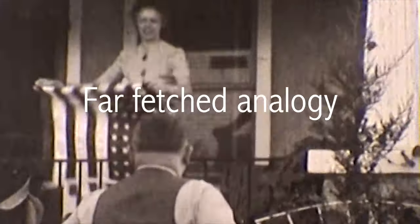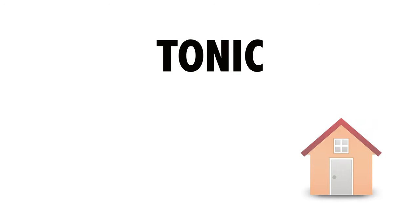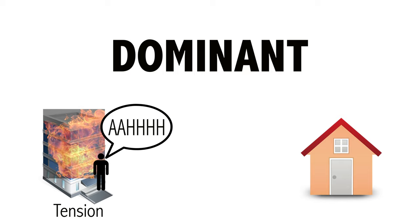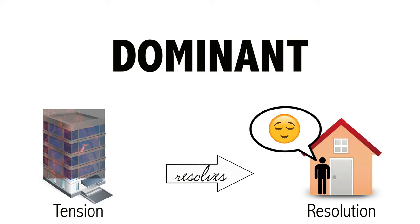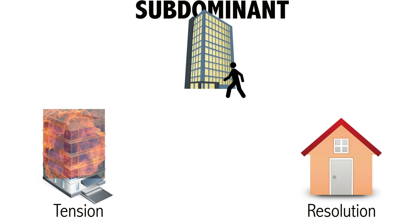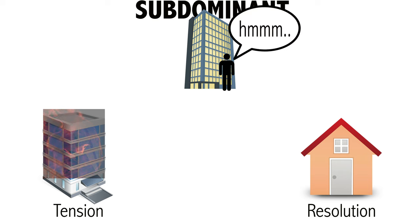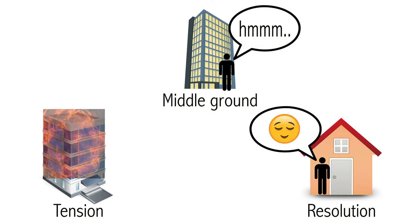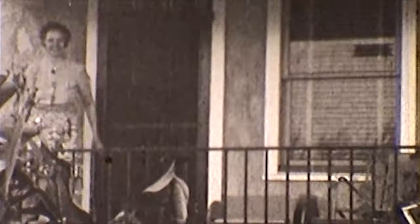Okay, far-fetched analogy time. Tonic is as if you were at home, everything is resolved and at rest. In dominant world, it's as if you were in a building that is on fire. The situation requires an urgent, urgent resolution. And subdominant is as if you were at, let's say, your office. It's fine, you can chill a bit, but you won't want to stay there forever. You'll want to go somewhere else eventually, either back home or towards more drama.